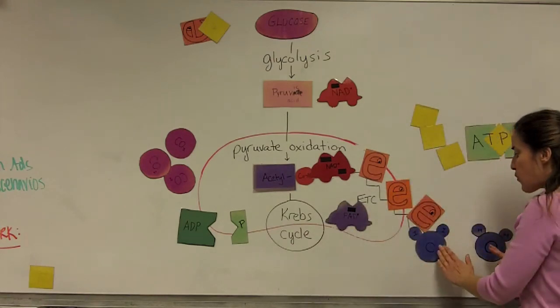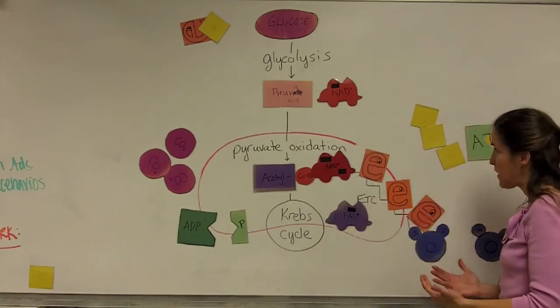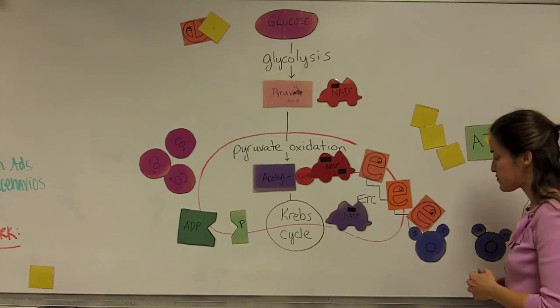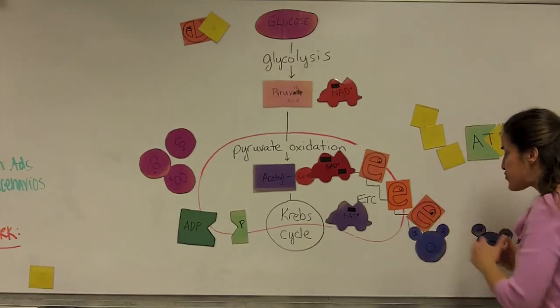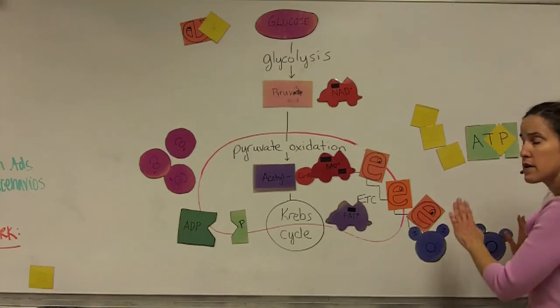In other words, without oxygen, the entire process of cellular respiration grinds to a halt. The cell cannot make ATP, and it will die very quickly. Because oxygen is so essential to the process of cellular respiration, we call it an aerobic process.